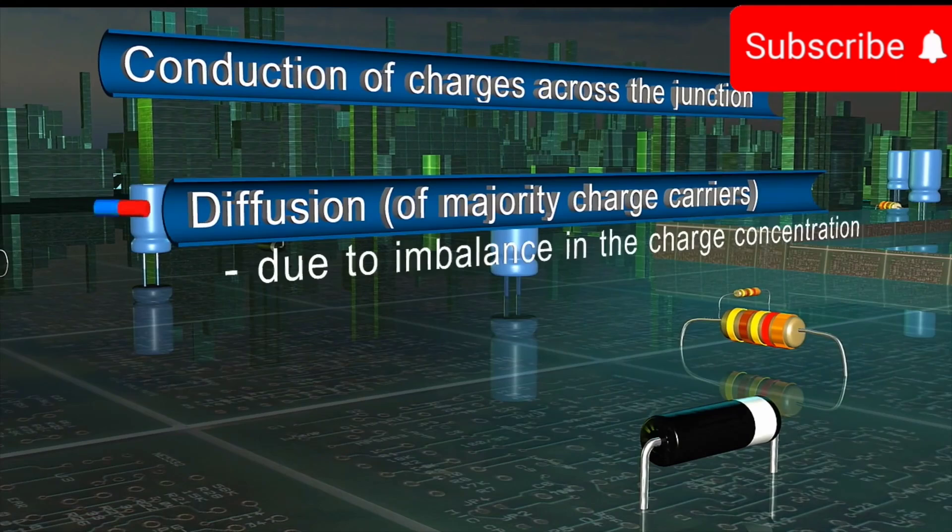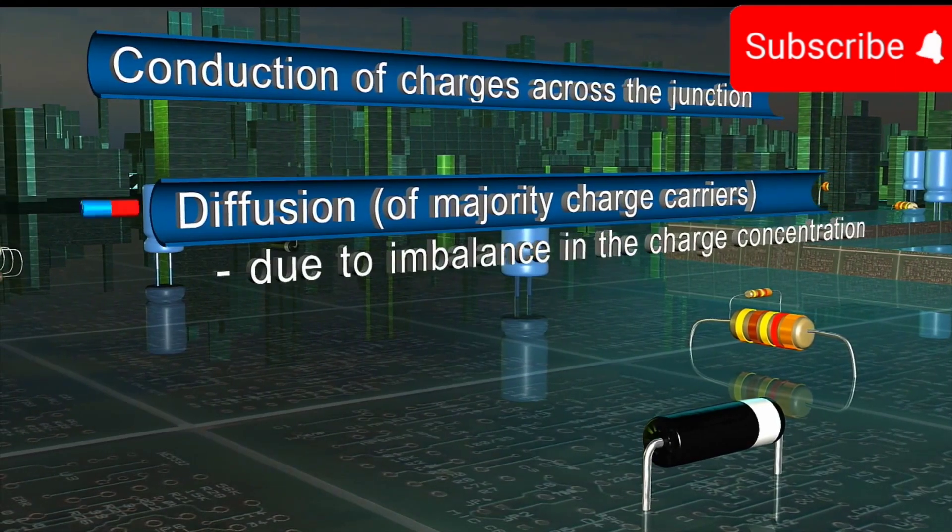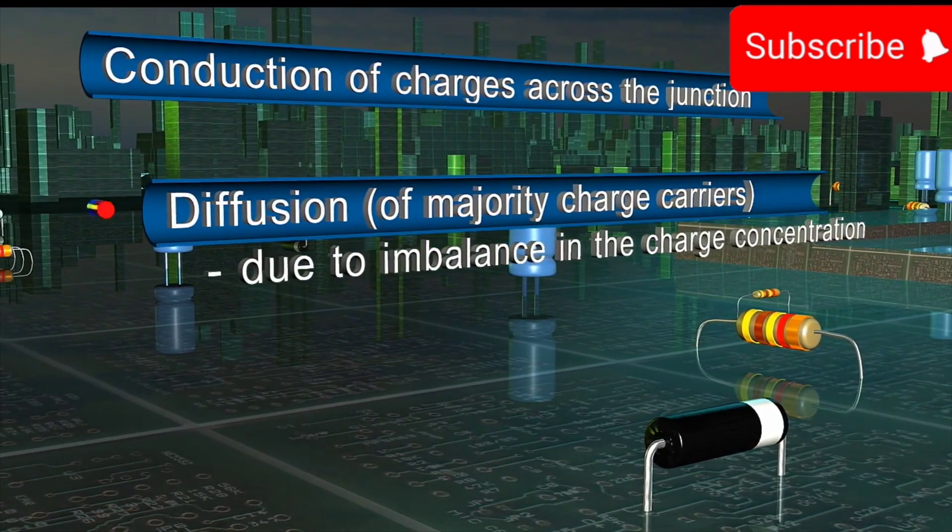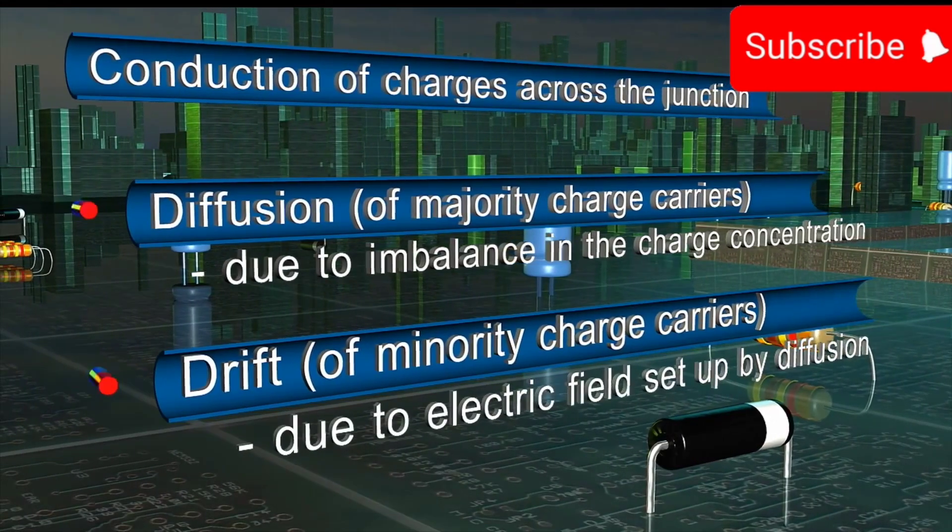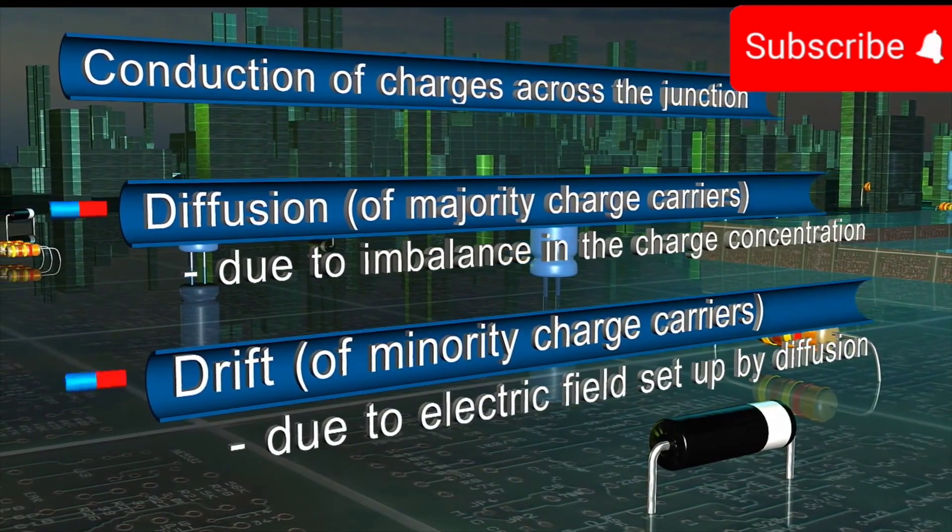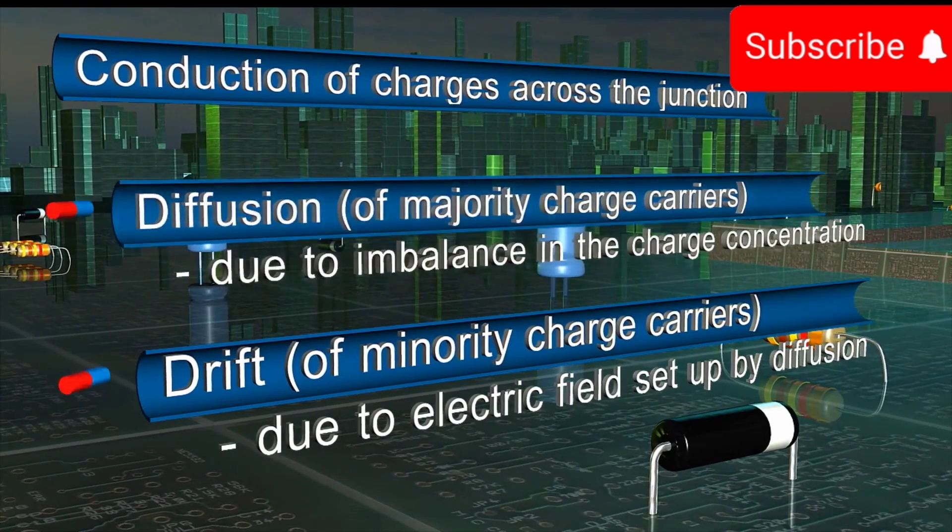1. Diffusion of majority charge carriers resulting due to the imbalance in the charge concentration. 2. Drift of minority charge carriers resulting due to the electric field set up by diffusion.